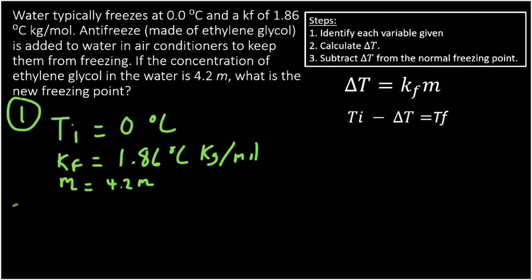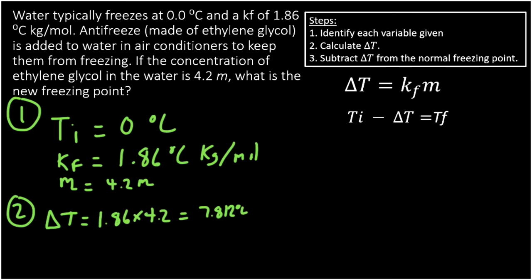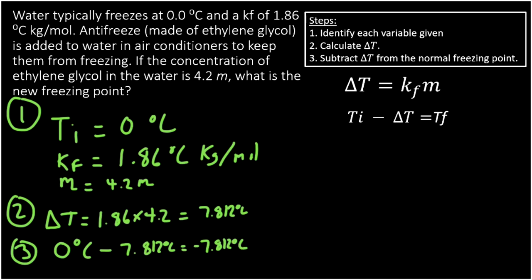Step one: the initial freezing point of water is 0 degrees Celsius, KF is 1.86 degrees Celsius kilograms per mole, and molality is 4.2. Step two: delta T equals 1.86 times 4.2, which gives 7.812 degrees Celsius. Step three: the new freezing point is 0 minus 7.812, which equals negative 7.812 degrees Celsius. Rounding to two sig figs, we get a new freezing point of minus 7.8 degrees Celsius. That is how freezing point depression and its calculations work.